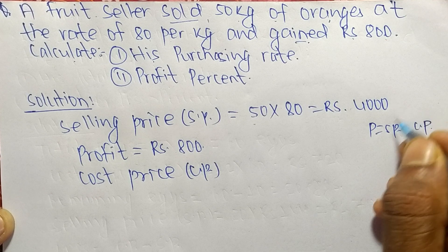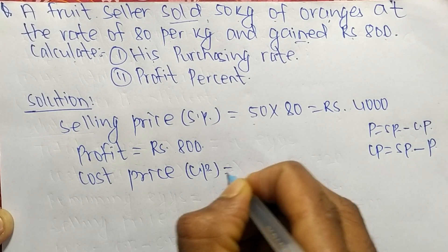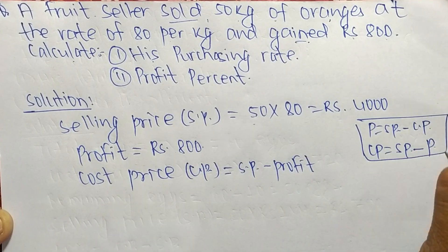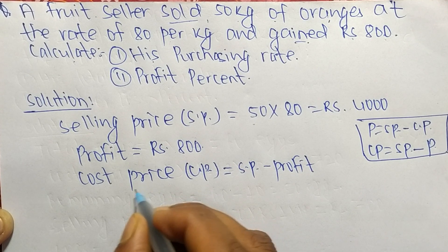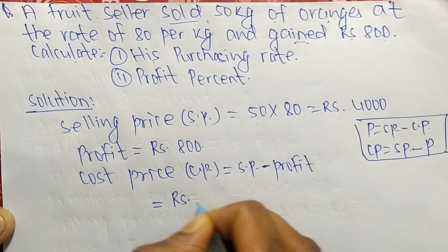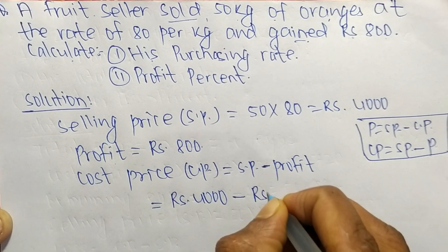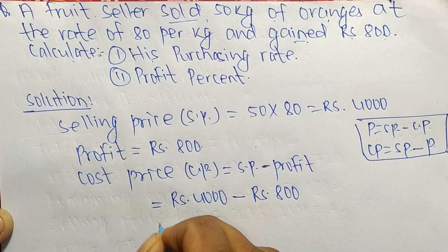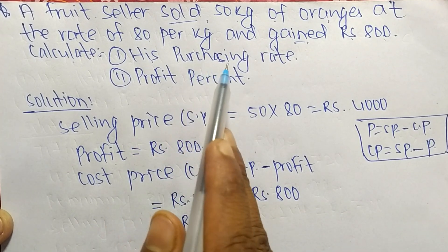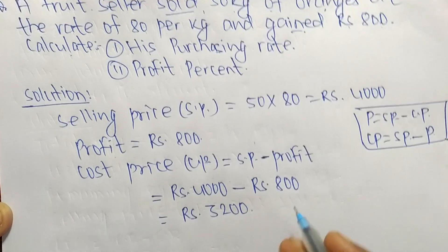We have to find out CP. When it moves to this side, then CP equals SP minus profit. So cost price is equal to SP minus profit. The formula to calculate cost price is SP minus profit. So SP is Rs. 4000 minus profit which is Rs. 800, so it is equal to Rs. 3200.